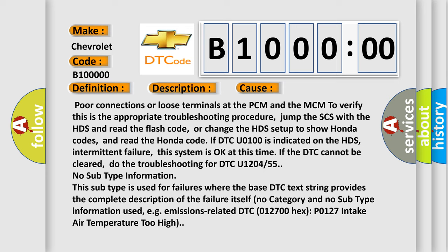No subtype information. This subtype is used for failures where the base DTC text string provides the complete description of the failure itself. No category and no subtype information used, for example, emissions-related DTC 012700 hex P0127 intake air temperature too high.